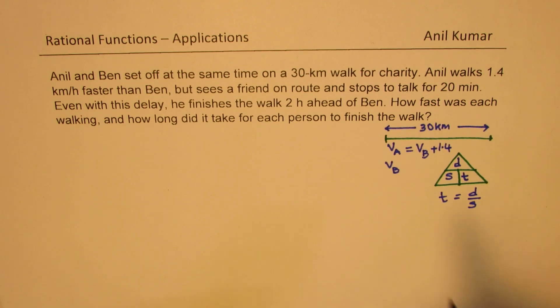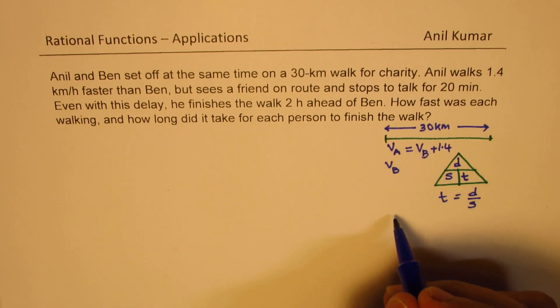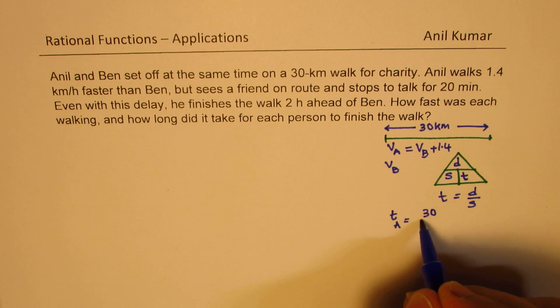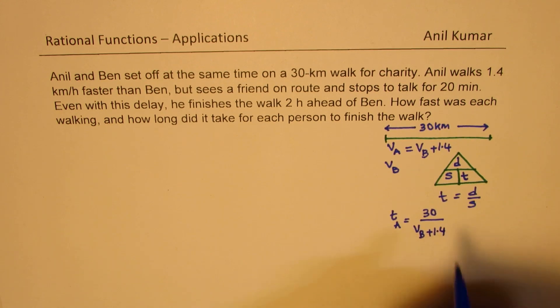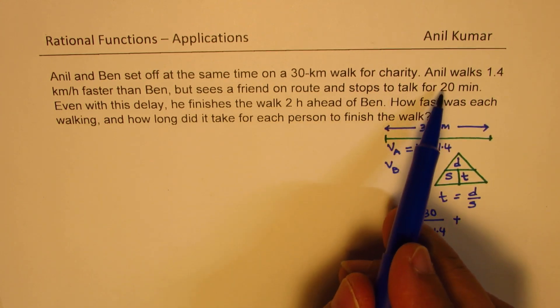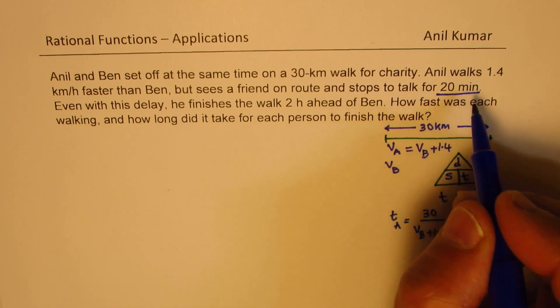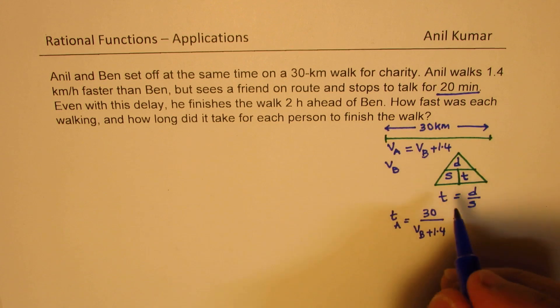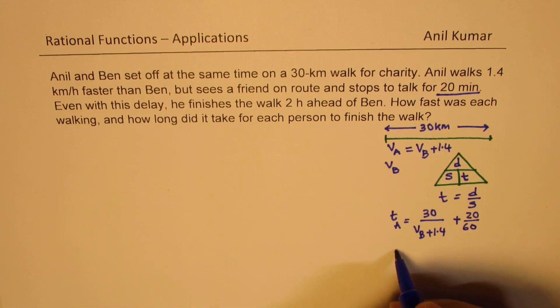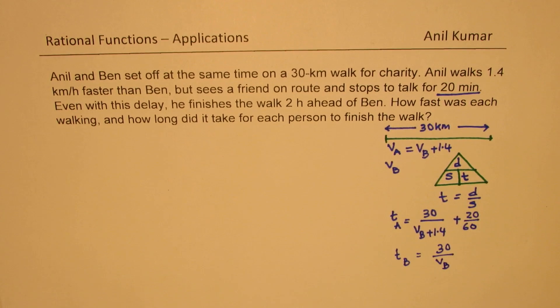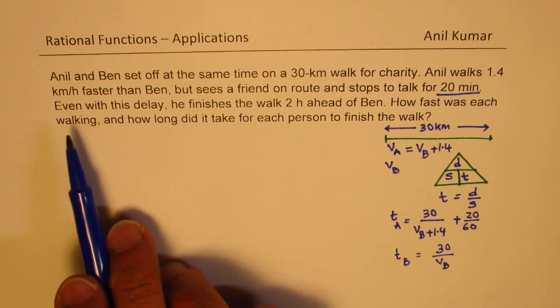Now from here, we can find both the times. Time taken by Anil will be the distance and the speed with which Anil walks, which is VB plus 1.4, plus also the time when he stops, 20 minutes. So when we say 20 minutes, 20 minutes is equal to 20 over 60 hours. So put this 20 over 60.